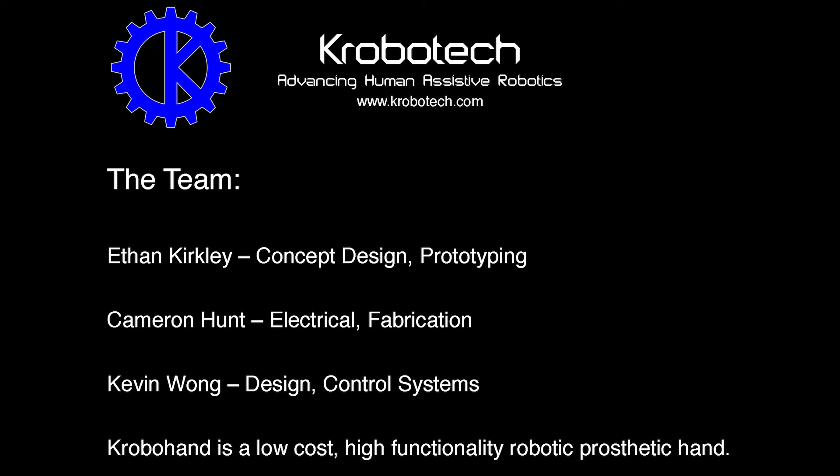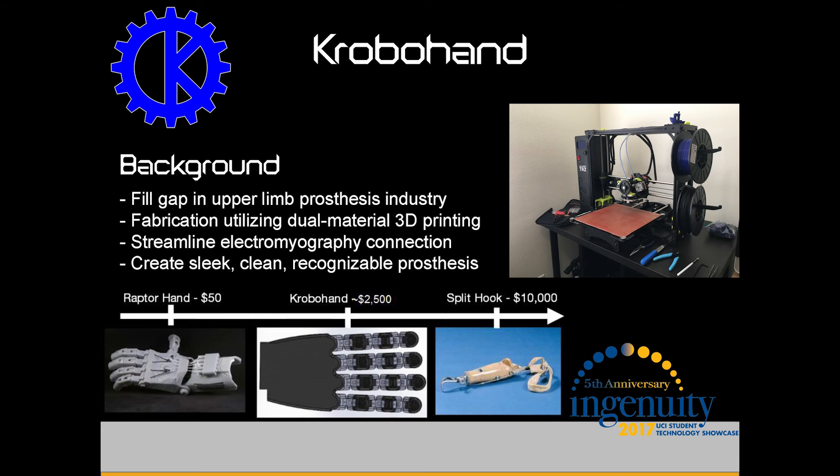My name is Ethan Kirkley, and I'm representing CroboTech. We strive to advance human-assist robotics. Our team consists of myself, lead of concept design and prototyping; Cameron Hunt, head of electrical and fabrication; and Kevin Wong, responsible for designing control systems. Our product is CroboHand, a low-cost, high-functionality robotic prosthetic hand. The motivation behind CroboHand stems from the gap in the upper limb prosthesis industry between cost and functionality. On one end we have low-cost, low-functionality devices like the Raptor hand; on the other, high cost but still low-to-medium functionality like the split hook. We want to fill this gap with a device that is both low-cost and high-functionality, utilizing dual-material 3D printing.